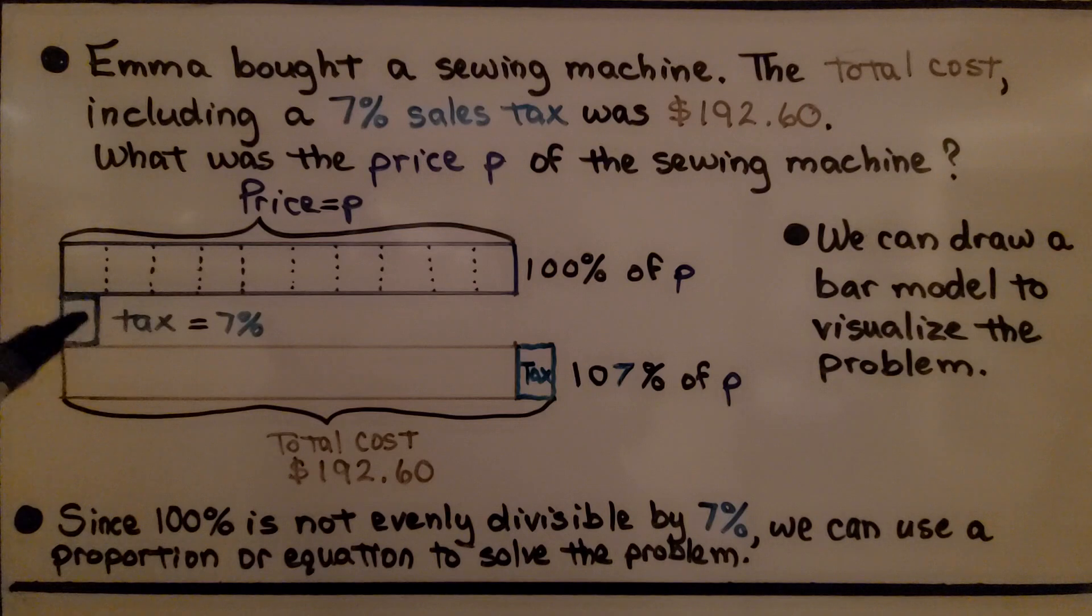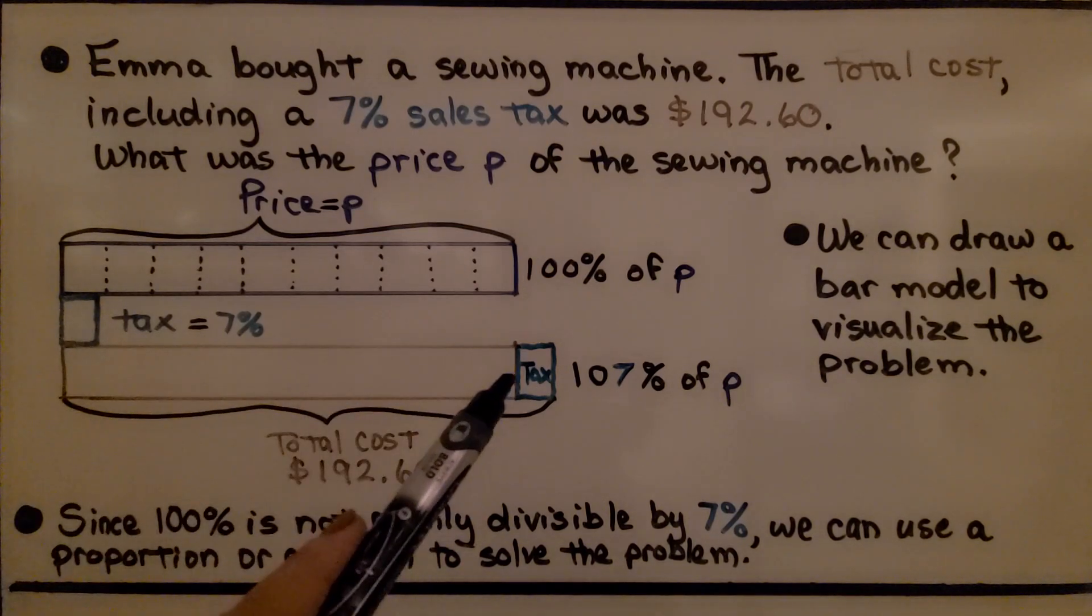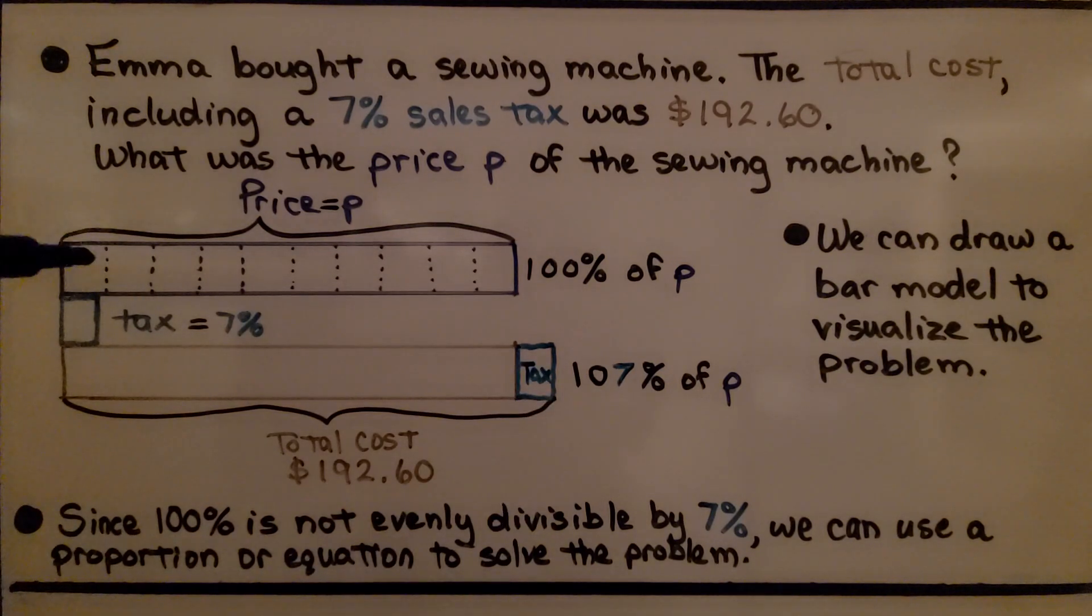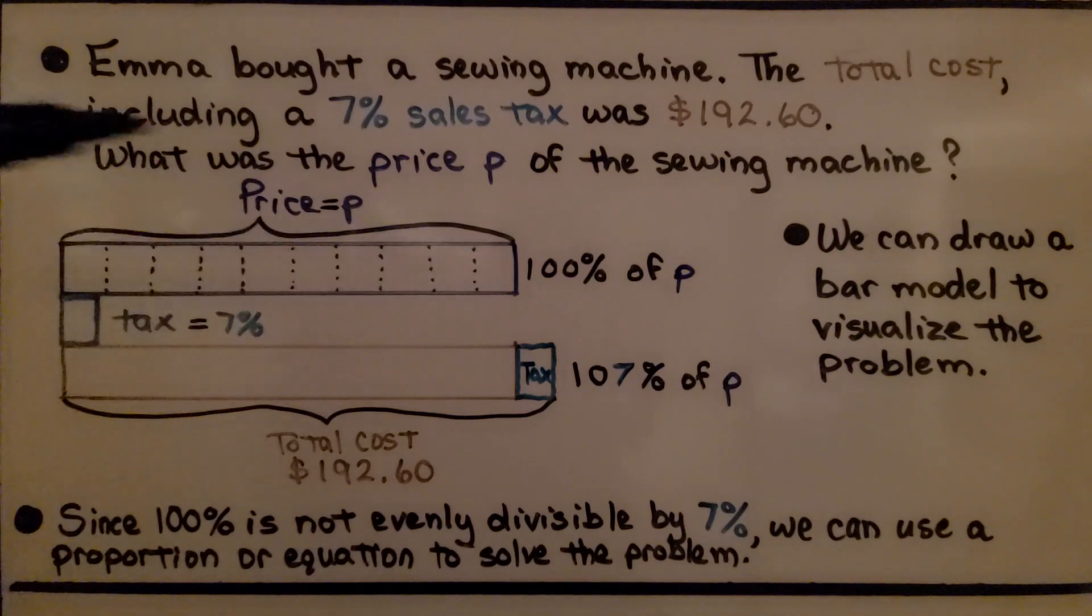Here's the 7% tax and here's the total cost. It's the price of the sewing machine plus that 7% tax. So here we've got the total price split into tenths, 10%, 10%, 10%. These are each 10% in between the dotted lines. So a 7% tax would be a little bit less than 10%, wouldn't it?